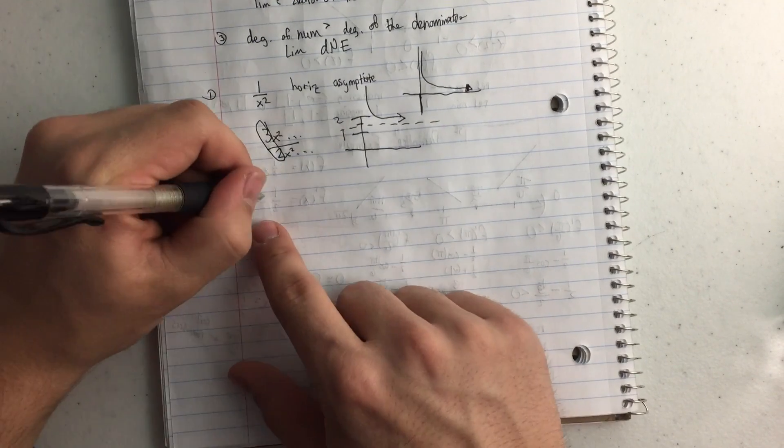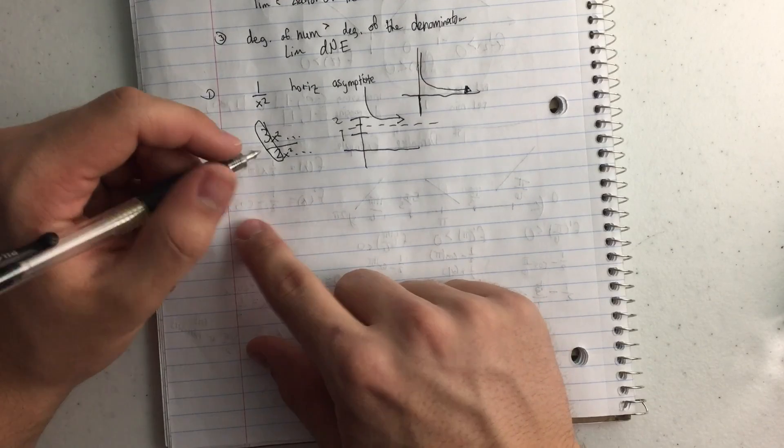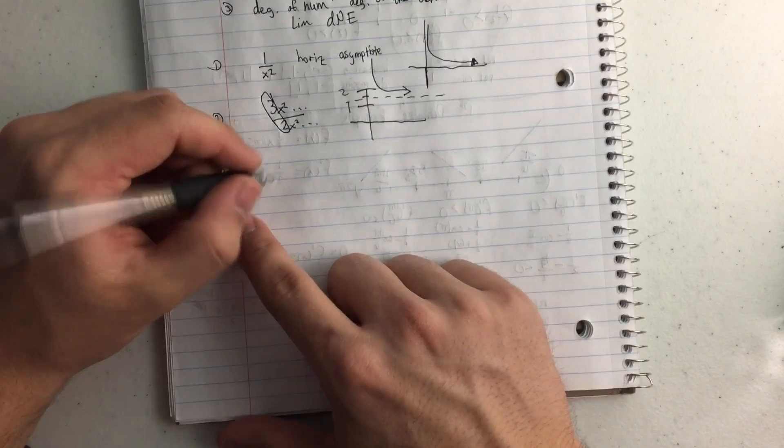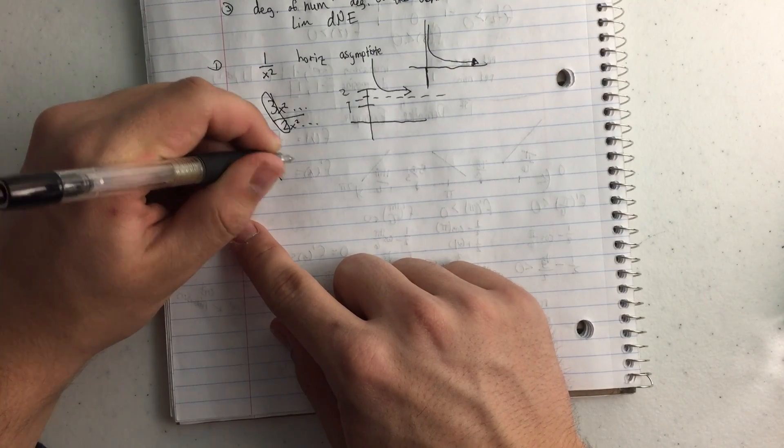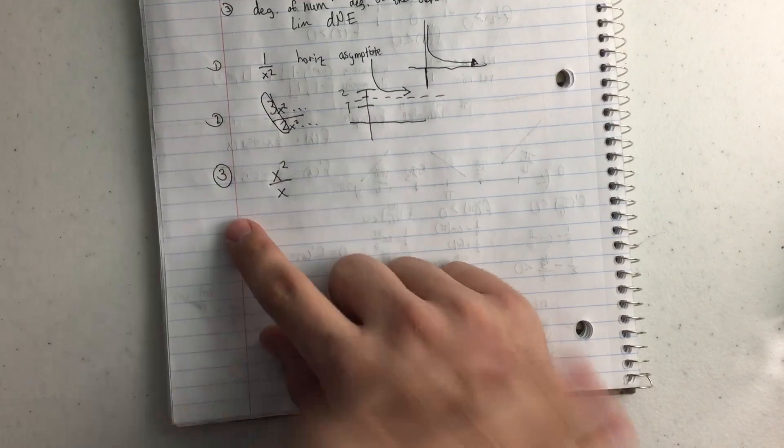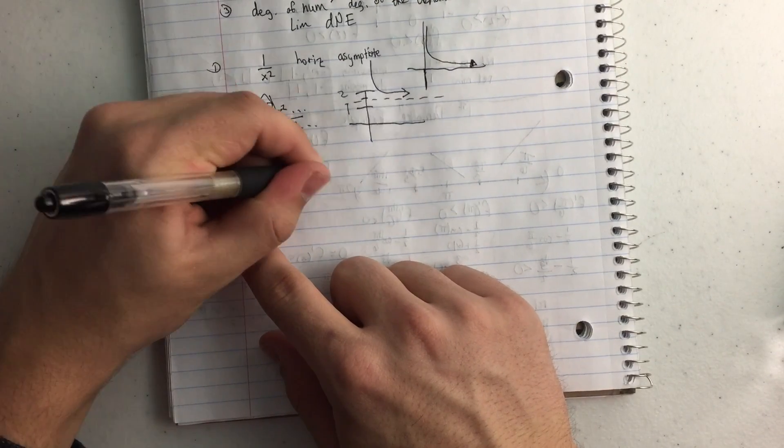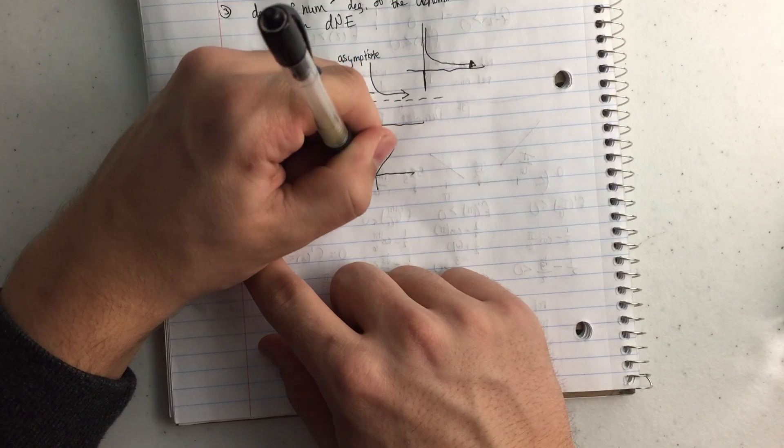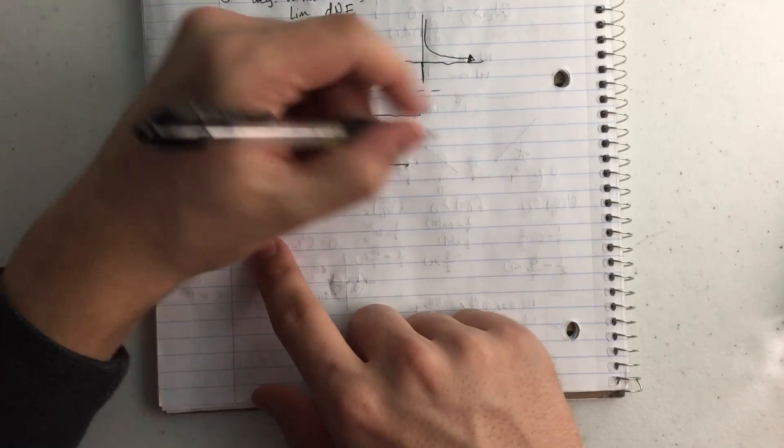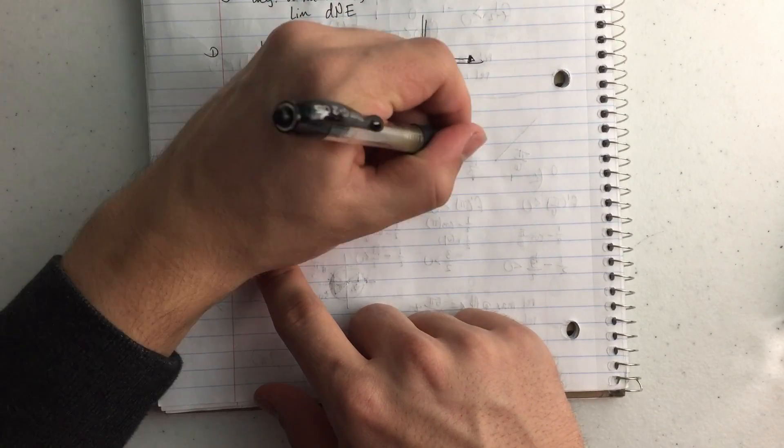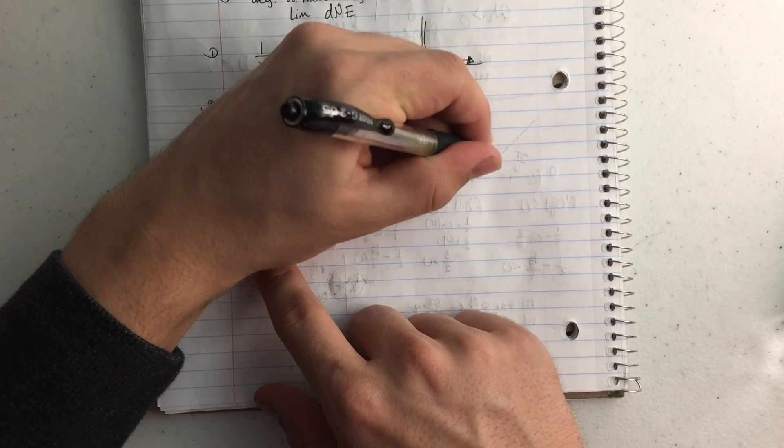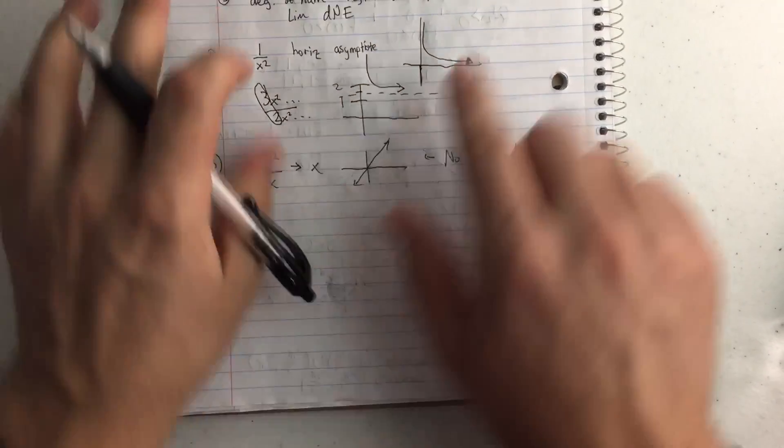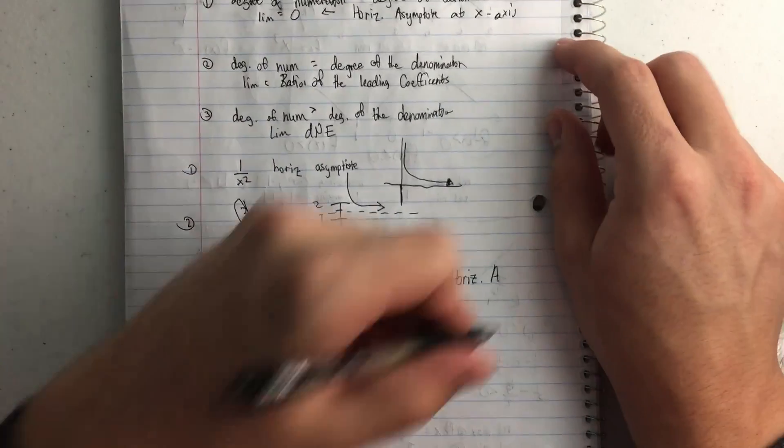And then for rule number three, the degree of the numerator is greater than the degree of the denominator. So that would be like x squared over x. Really that's just going to go to x, and that would look like this. So there's no place where it has a horizontal asymptote. And that's why the limit doesn't exist for that, because it doesn't have one.